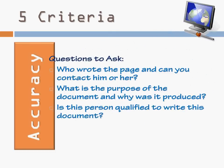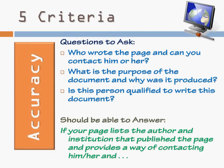The first criteria that we need to look at when we're looking at a webpage is its accuracy. Can you answer these questions? Who wrote the page? Can you contact him or her? What is the purpose of the document? Why was it produced? Is the person qualified to write this document? By addressing those questions, you should be able to identify who wrote the page and therefore do some research on them. If they are a reputable author, then you can verify the webpage. If you can't contact this person, if this person prefers to be anonymous, then you cannot verify the reputableness of this author.